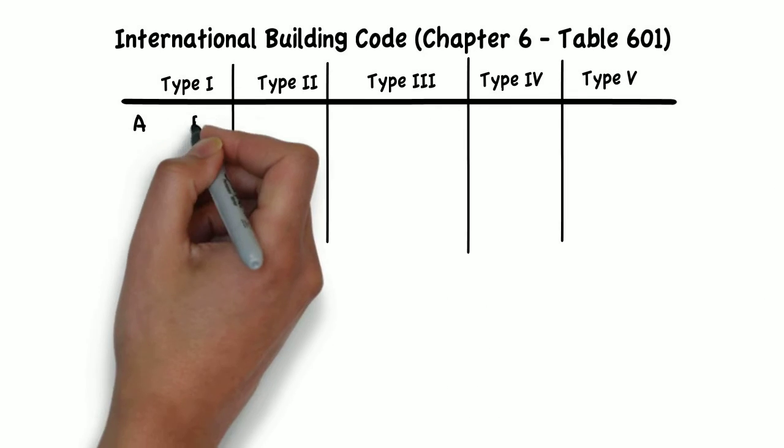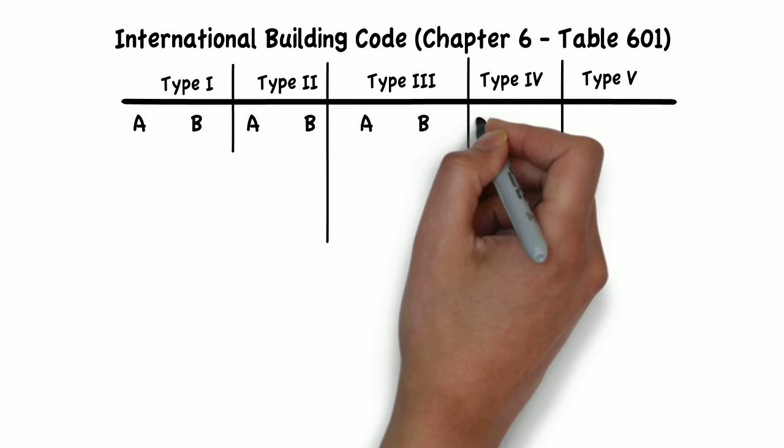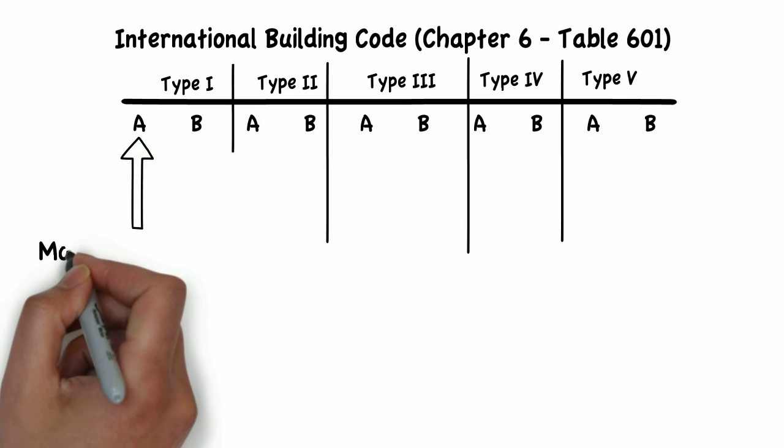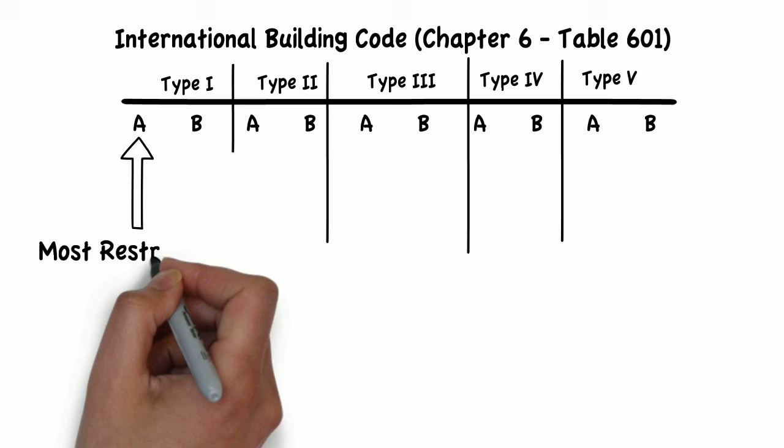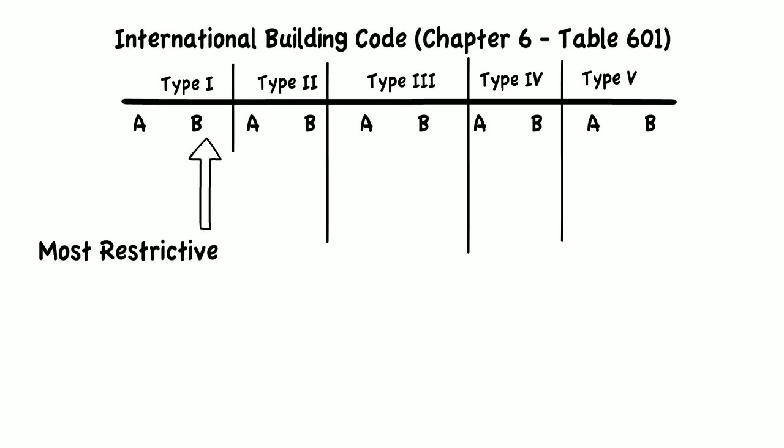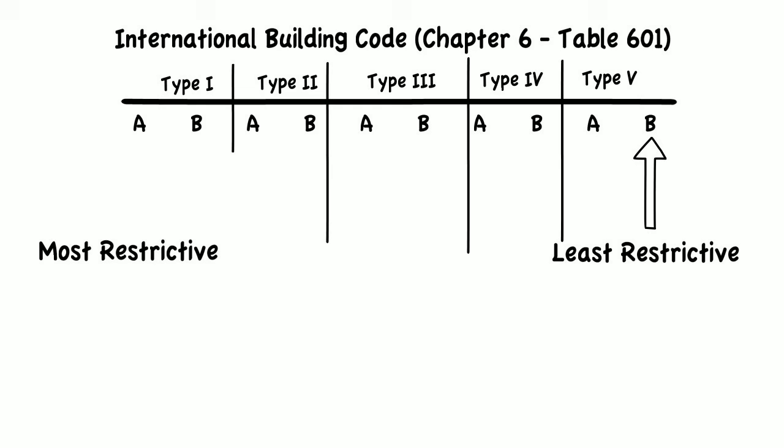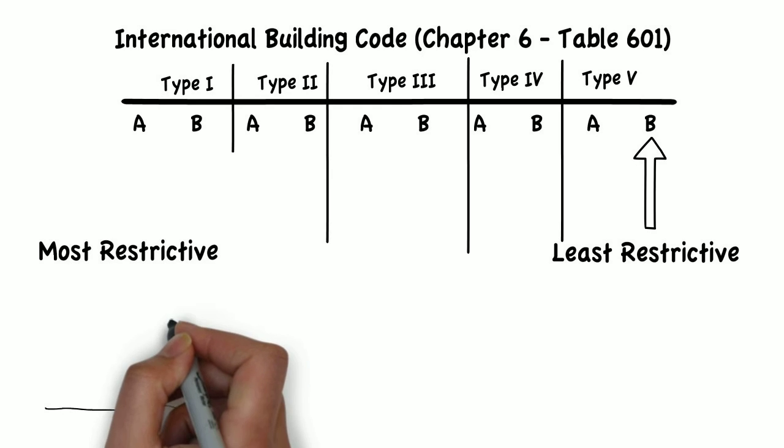Each building type has options of A or B, with option A being more restrictive. Using this analogy, building Type 1A is the most restrictive and Type 5B is the least restrictive, both in terms of construction material allowances and rating requirements.